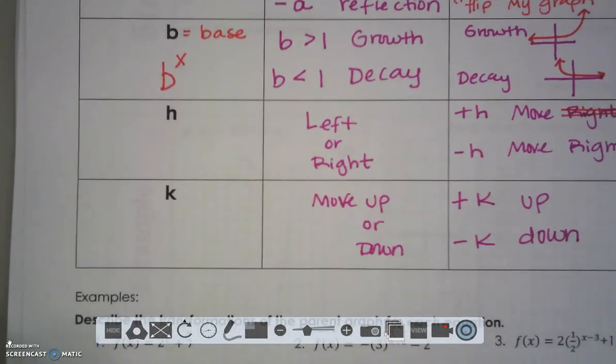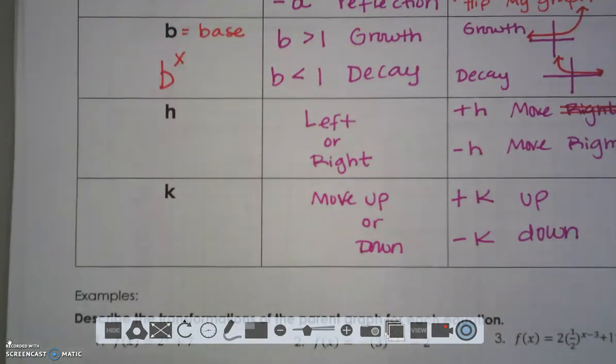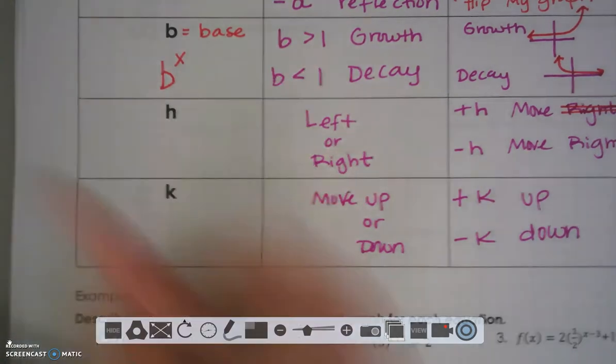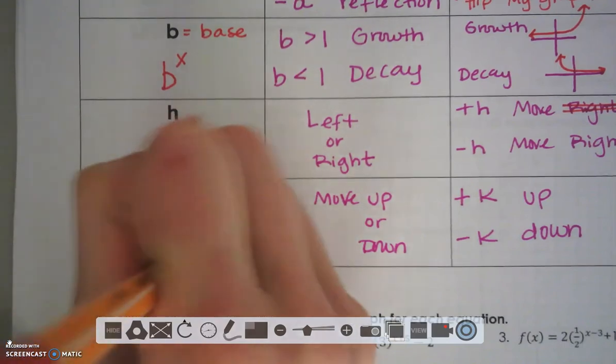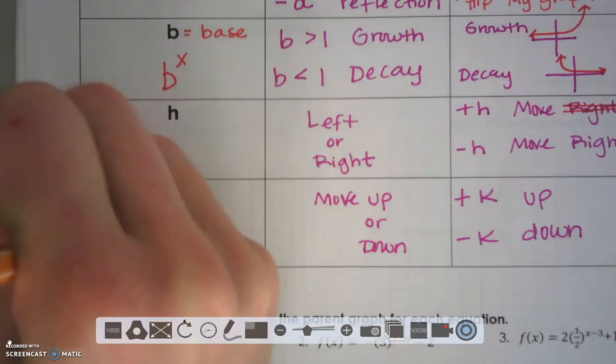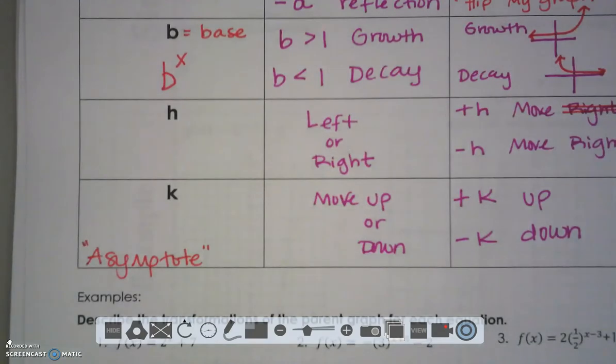When we talk about exponentials, there's also a unique characteristic. This is also called your asymptote. And we'll get more into that when we graph. But your K value is the same one as your asymptote.